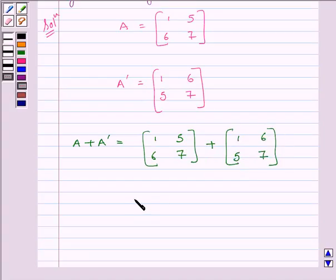Now, adding corresponding elements of the two matrices, we get 1 plus 1 is 2, 5 plus 6 is 11, 6 plus 5 is 11, 7 plus 7 is equal to 14. So we get A plus A transpose is equal to matrix 2, 11, 11, 14.